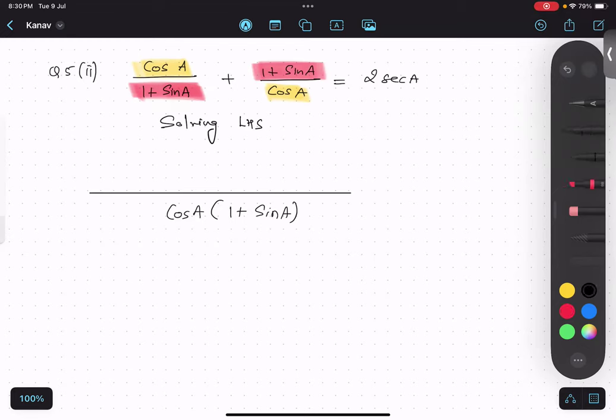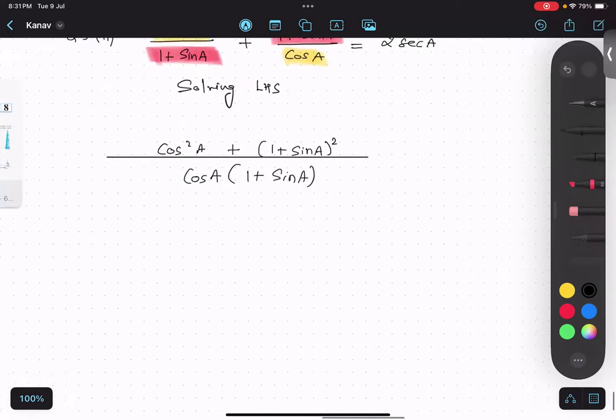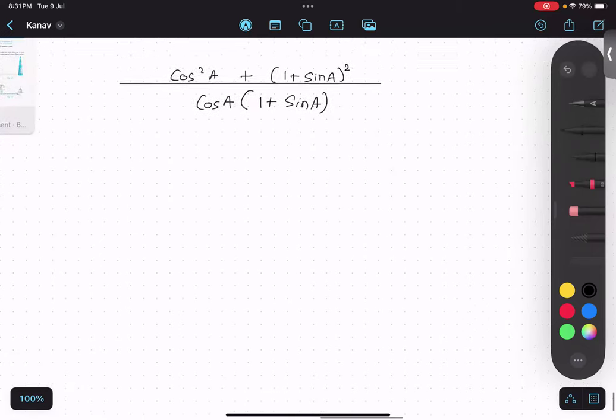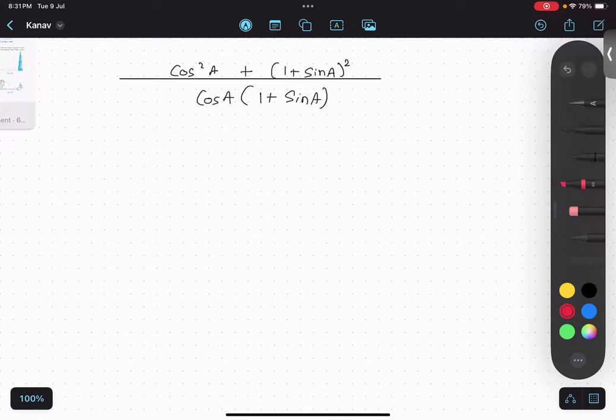So I will be getting over here cos square A, cos square A plus 1 plus sin A whole square - identity again. Now, important learning over here which you should remember: till the point it is not required, please do not multiply, keep it as it is. It's my teacher experience, I am telling you, it will get cancelled.